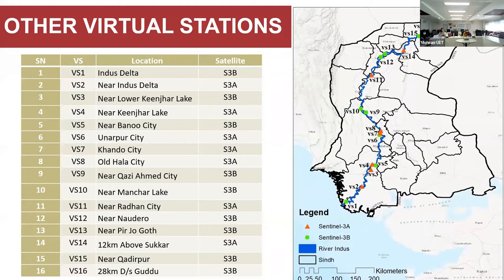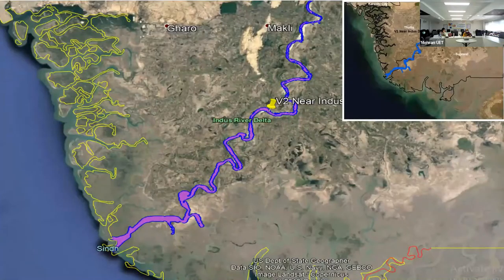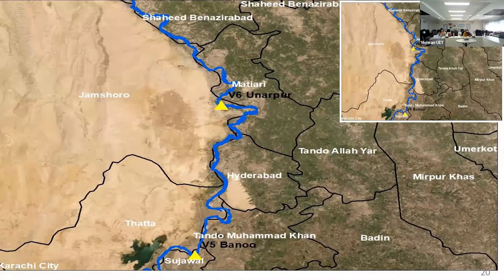This is the same map shown earlier, now describing where the virtual stations are present. We have some virtual stations near the Indus Delta in the coastal region as well, which can help analyze flow patterns along the Indus River. This screenshot shows one virtual station near the coastal areas near the Indus Delta, and near our region of Jamshoro and Hyderabad, two stations are visible.